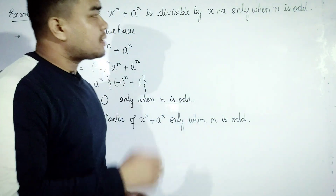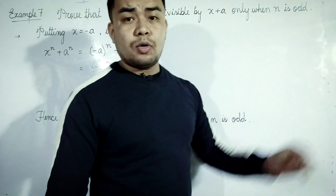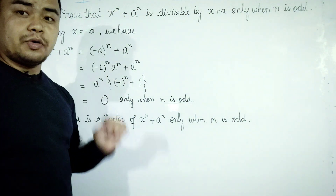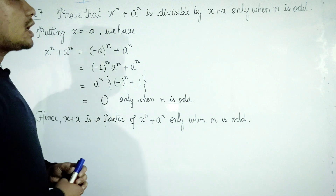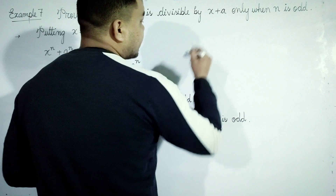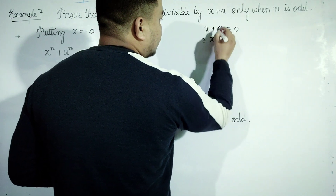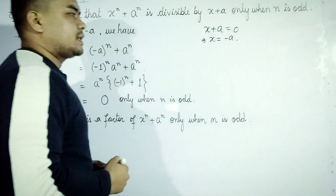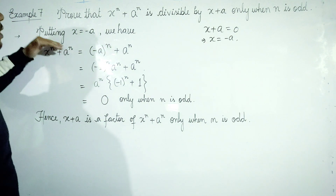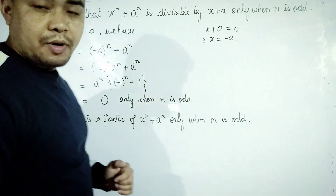We divide the polynomial x to the power n plus a to the power n by x plus a. To test divisibility, we put x equal to minus a. So we have the polynomial x to the power n plus a to the power n, with x equal to minus a.